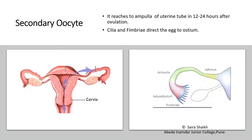In a typical 28-day menstrual cycle, on the 14th day, ovulation takes place. During ovulation, the secondary oocyte is released from the ovary and it comes into the fallopian tube or the uterine tube. The egg is collected by the fimbriae. Inside the uterine tube, cilia structures are present, and they help to direct the egg into the ampulla.